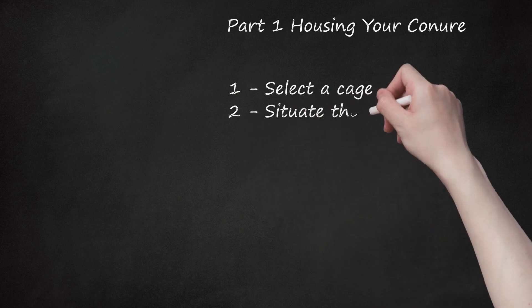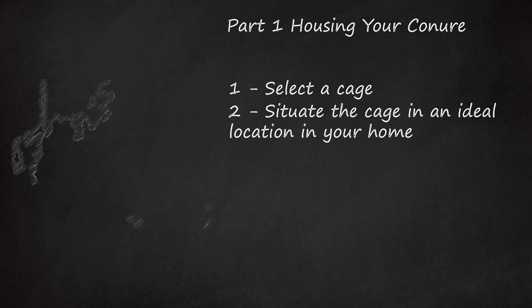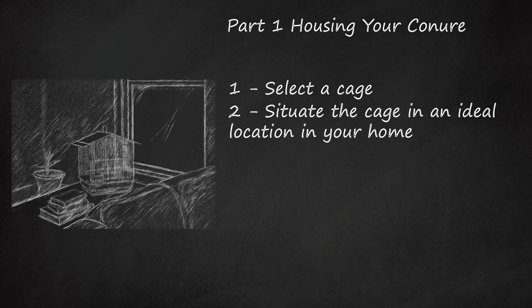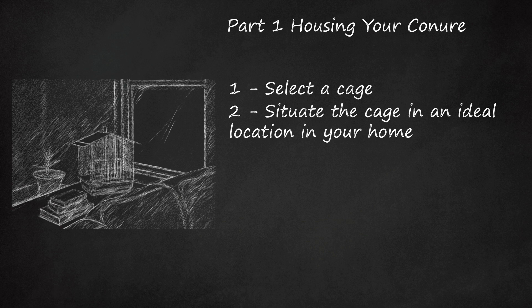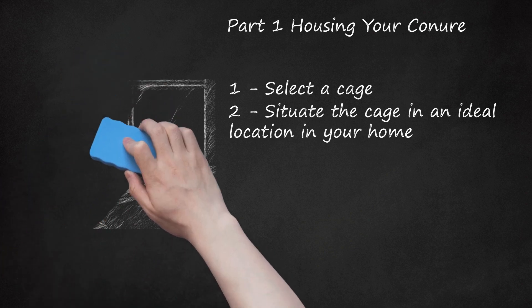Situate the cage in an ideal location in your home. Your conure's cage should be in a room that is not in the direct path of harmful kitchen fumes. Within the room, make sure not to place the cage in direct sunlight. Conures are most comfortable in rooms that are 70 to 80 degrees Fahrenheit (21 to 27 degrees Celsius), which is the typical room temperature for most homes. The room should also be free of drafts. Many types of fumes are toxic to conures, including perfumes, aerosols, and fumes from cleaning products and non-stick cookware.